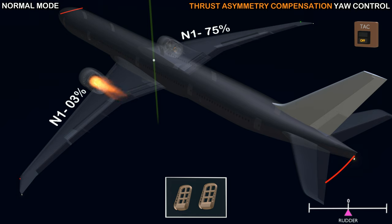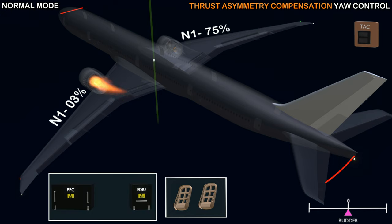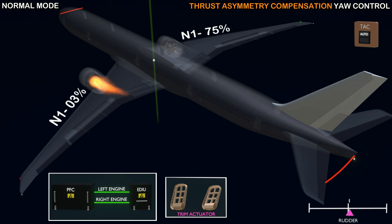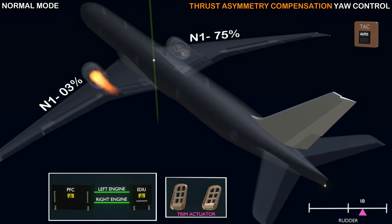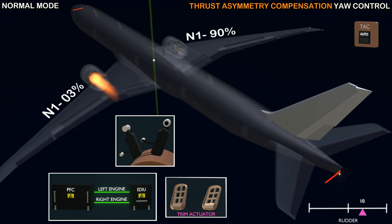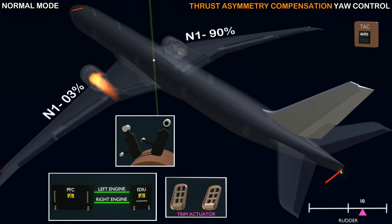On the 777, instead of trimming the aircraft manually, pilots can use the thrust asymmetry compensation function of the flight computer. When the thrust asymmetry compensation switch is in auto, the flight computer monitors the thrust produced by the engines using the data provided by the engine computer. When the flight computer notices a difference in thrust, it automatically compensates by operating the trim actuator. A further benefit of the TAC function is when changing the thrust of the working engine. In manual trim, the pilot has to re-trim the aircraft. In automatic trim, the flight computer continuously monitors the change in thrust and compensates by re-trimming the rudder.